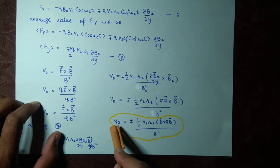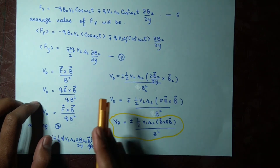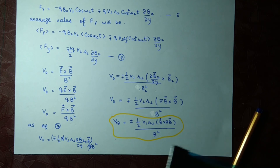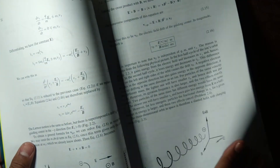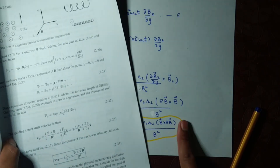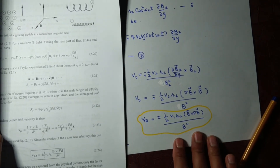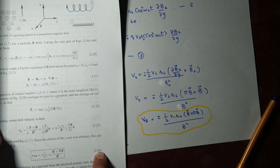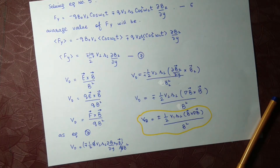Our equation for the gradient drift velocity is now derived — this is our required equation matching the textbook. You can see equation 2.24: the positive version for positive charge and the negative version for negative charge. Both equations are similar to each other. We have completed the derivation. Thank you very much for your time — Assalamu Alaikum.